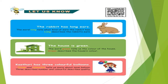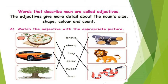Now we are going to study about the grammar part. 'The rabbit has long ears' — the word 'long' tells what kind of ears the rabbit has; 'long' describes the rabbit's ears. 'The house is green' — the word 'green' tells us the color of the house. 'Kasturi has three colorful balloons' — 'three' and 'colorful' tell us more about the noun 'balloon'; 'three' describes number and 'colorful' describes quality. Words that describe nouns are called adjectives. Adjectives give more detail about the noun: size, shape, color, and count.